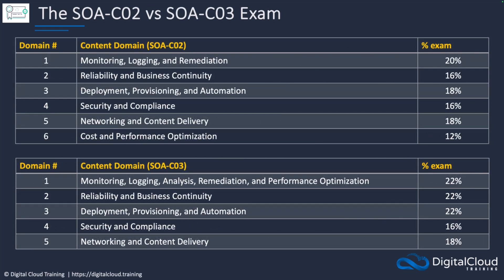Comparing old versus new: AWS breaks the exam into different content domains — the knowledge areas, topics, and services you need to understand. You'll notice it's almost identical. The main difference is they collapsed from six domains in the SysOps Administrator C02 to five domains. Performance optimisation has been moved into domain one, so they just reallocated that into a different place. Cost seems to have been removed from the domain names, but it's still mentioned in the exam guide so it may be de-emphasised but it's certainly still there.